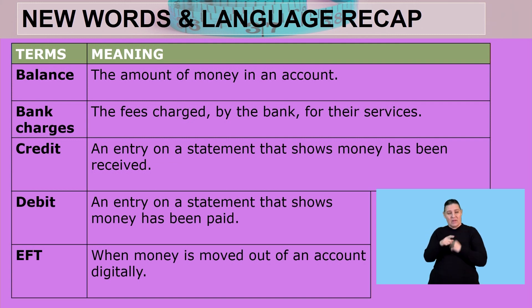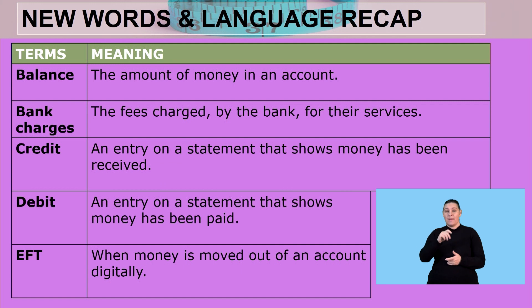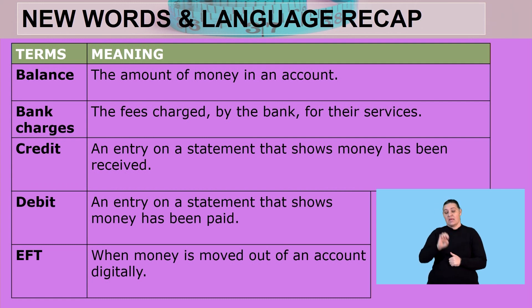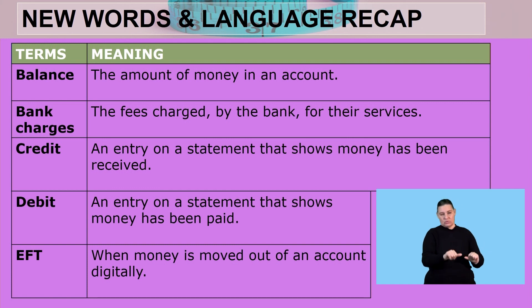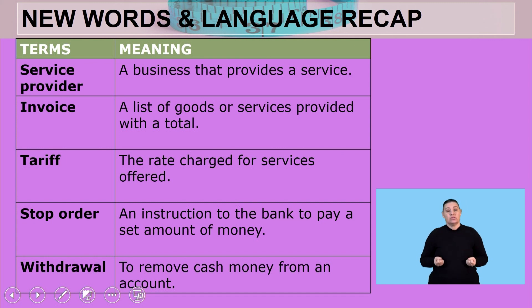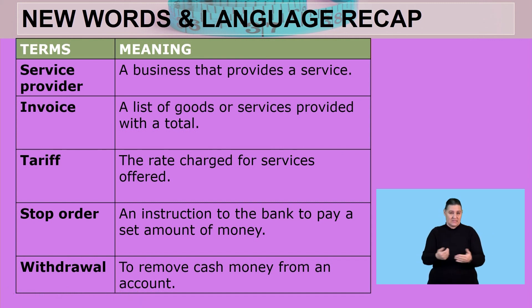Bank charges: the fees charged by the bank for their services. Credit: an entry on a statement that shows money has been received. Debit: an entry on a statement that shows money has been paid. EFT: when money is moved out of an account digitally, usually via cell phone banking.